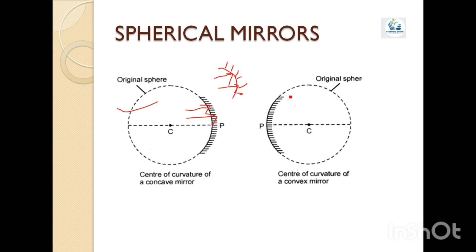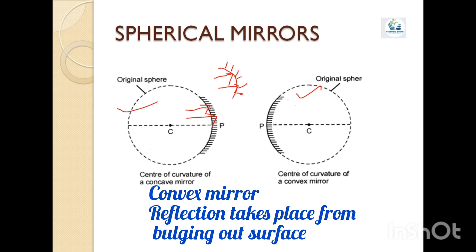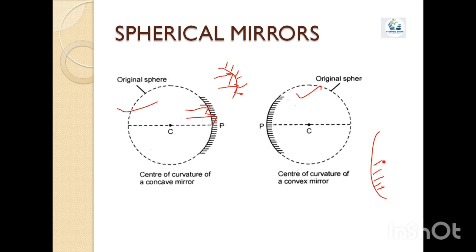A convex mirror is that spherical mirror in which reflection of light takes place at the convex surface, or bulging-out surface. In this case, the inside is silver-coated or protected with paint, and the reflecting surface is the bulging-out surface.